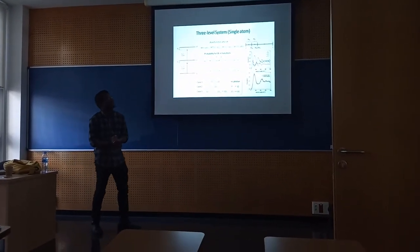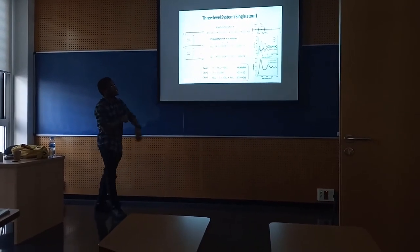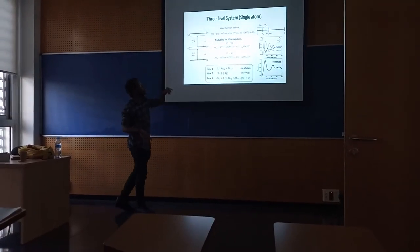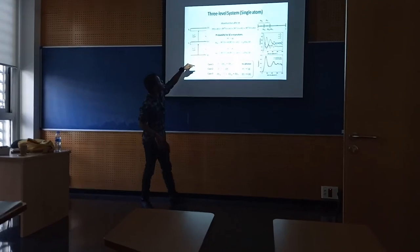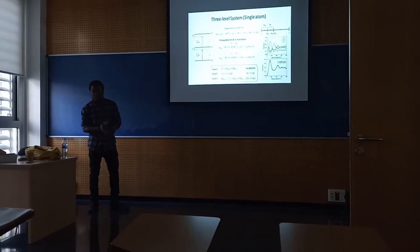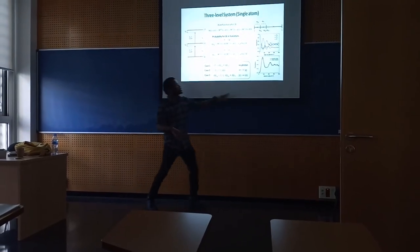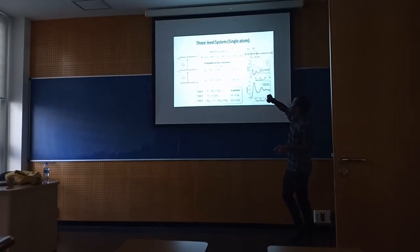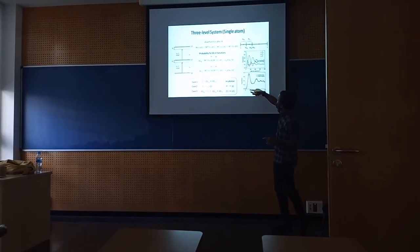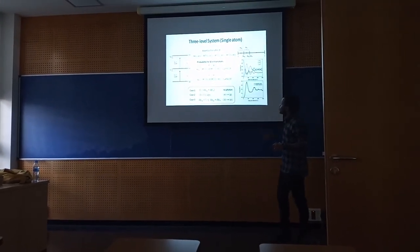Extending this method to a three-level system for a single atom, the wave function after DT is the sum over three states. The probability for spontaneous emission in the transition E→G is dP_EG, and the probability in transition R→E is dP_RE. There are now three cases: no photon detection, spontaneous emission in transition E→G, and spontaneous emission in transition R→E. We plotted an ensemble of 100 Monte Carlo wave functions for the three states, comparing the quantum jump method (black line) with the master equation (red line), observing perfect agreement.